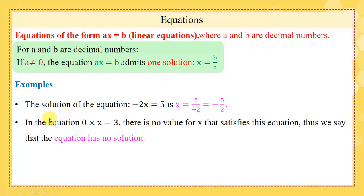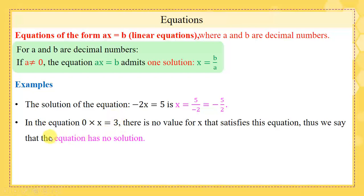In the equation 0 times x equals 3, there is no value of x that satisfies this equation. Thus we say that the equation has no solution. So when the coefficient of x, a, equals 0 while the other side b is different from 0, we say that the equation has no solution.